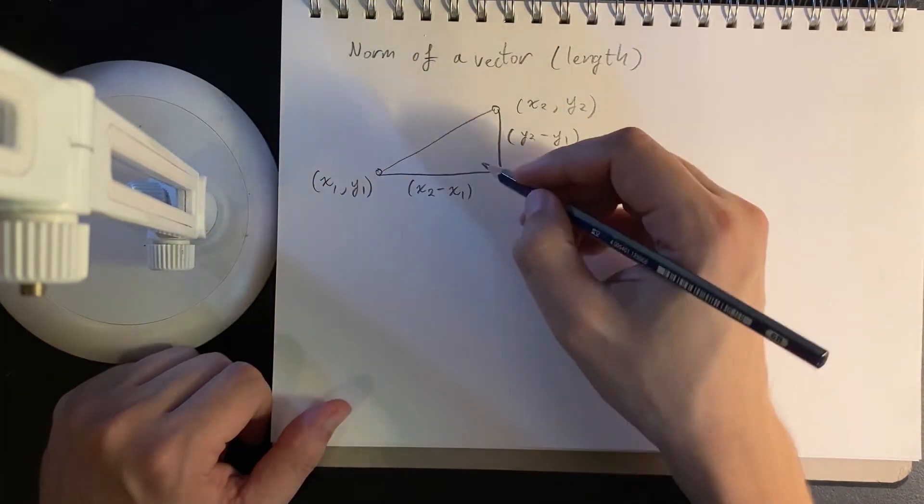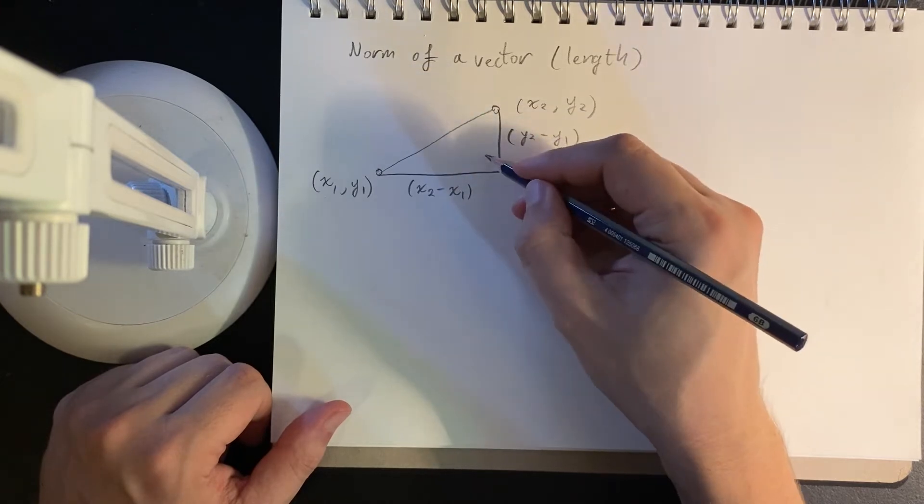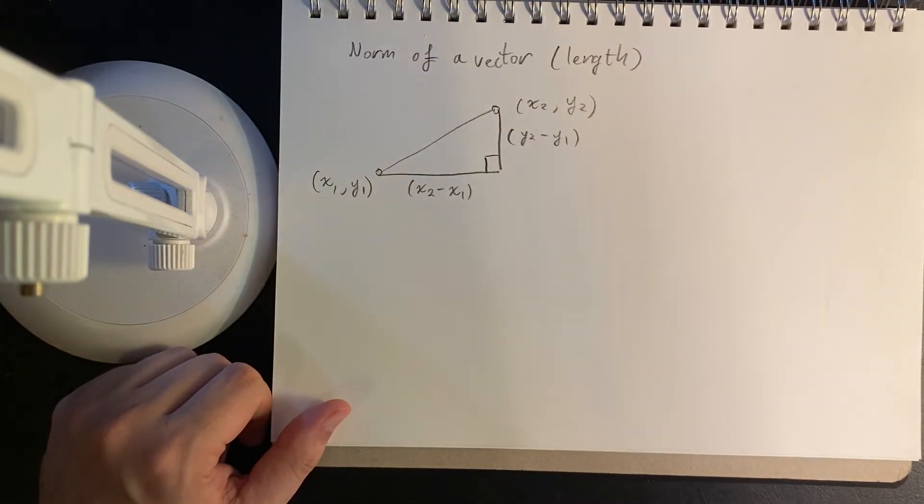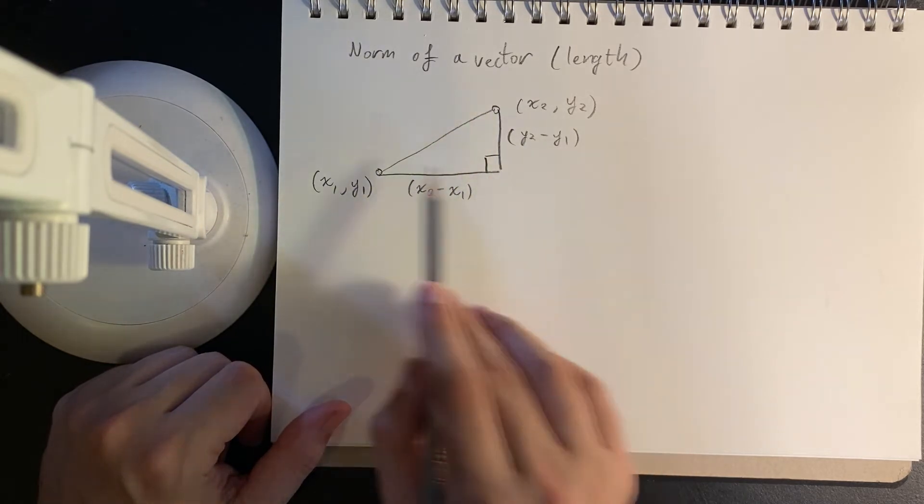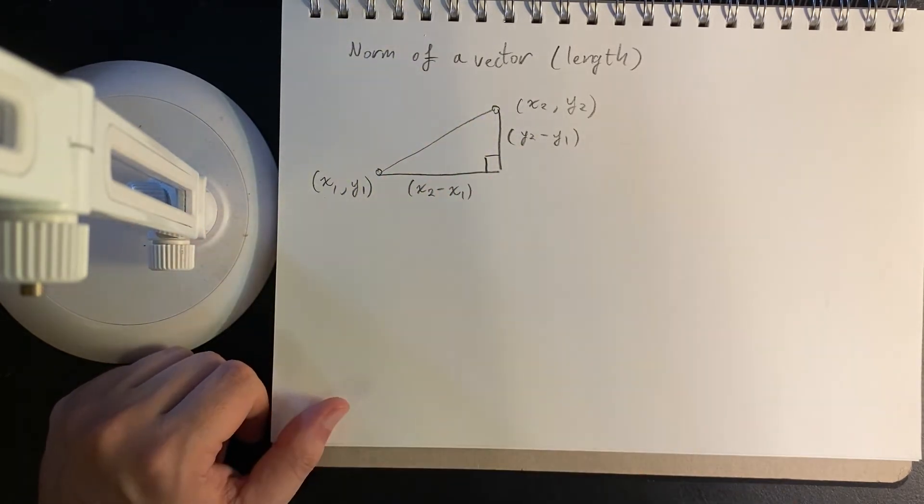And then because x and y are perpendicular to each other, we have a right-angled triangle here. Another way to think about it is we have an orthogonal system, a linearly independent system.